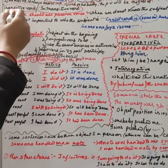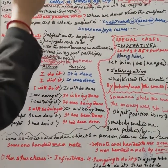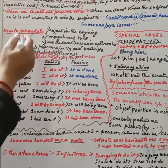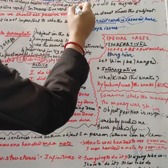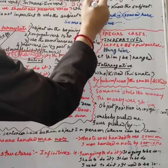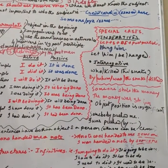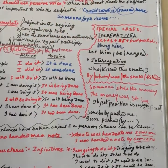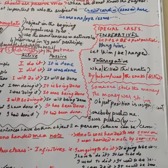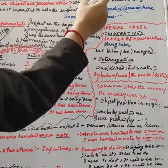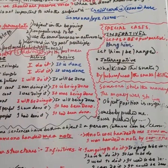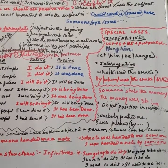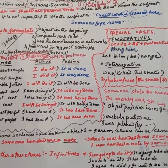Another important thing we cannot ignore is transitive and intransitive verbs. Take the example 'Birds fly.' Here, 'birds' is the subject and 'fly' is the verb. If you ask 'what?' or 'where?' you won't get an answer — there is no object. So this is an intransitive verb.